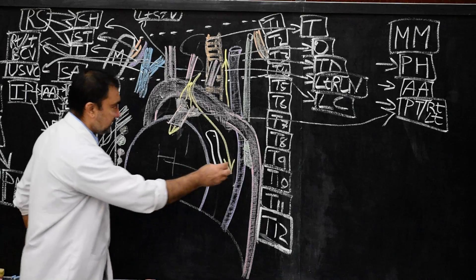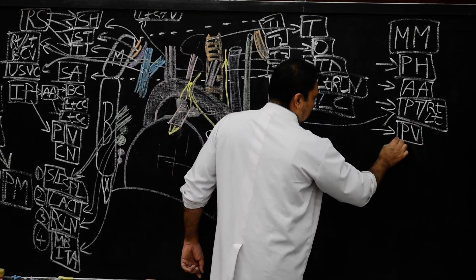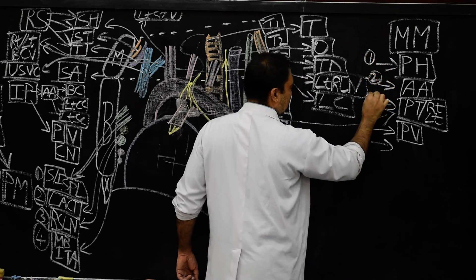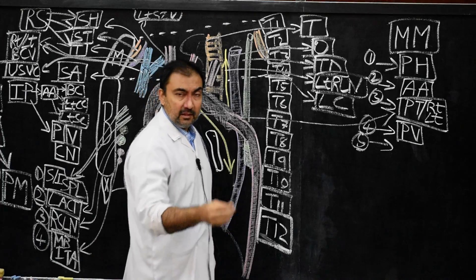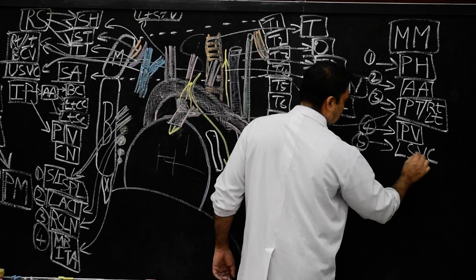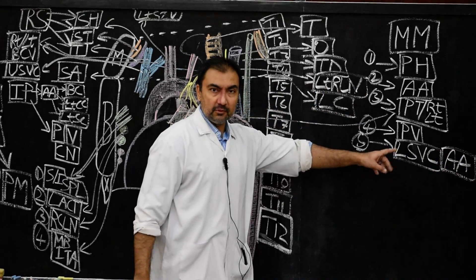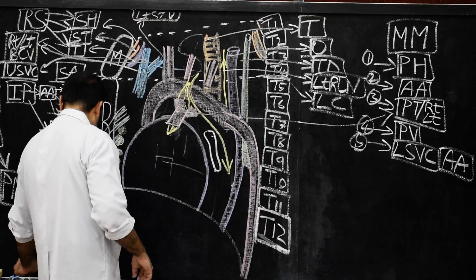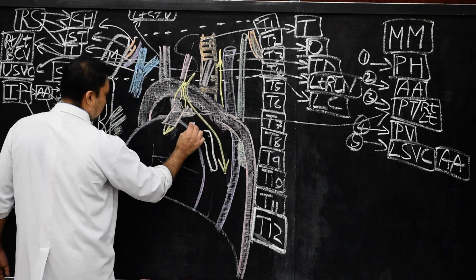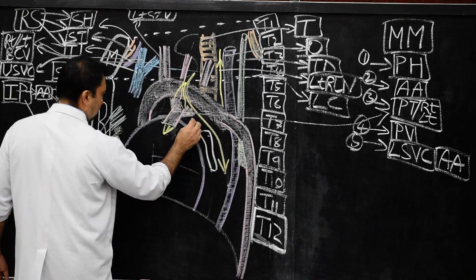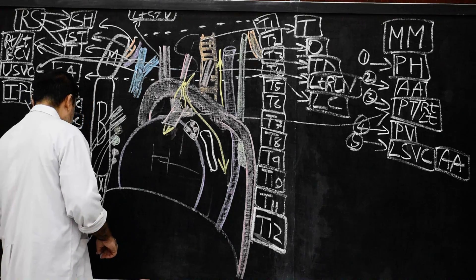Structure number four will be our pulmonary veins — all four pulmonary veins. Structure number five will be the lower part of superior vena cava including the arch of azygous vein. This is very important structure number five also.